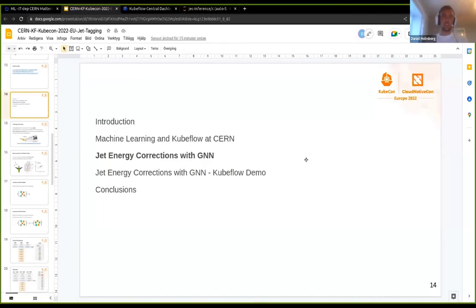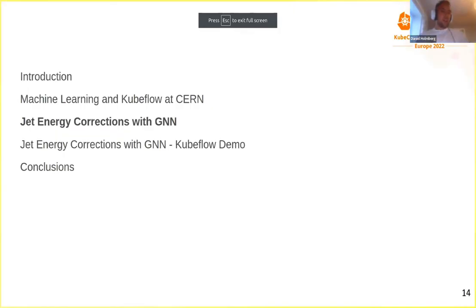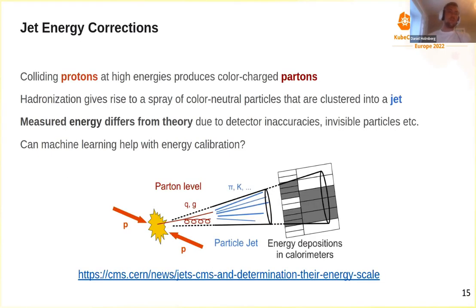I'll continue with the particle physics use case. What I've studied is called generative jet energy corrections, and I used machine learning — specifically graph neural networks — to do energy calibration. Previously this was done using non-machine-learning methods. In the Large Hadron Collider, protons are collided at very high energy, releasing partons such as quarks and gluons. These particles cannot exist freely in nature due to color confinement in physics.